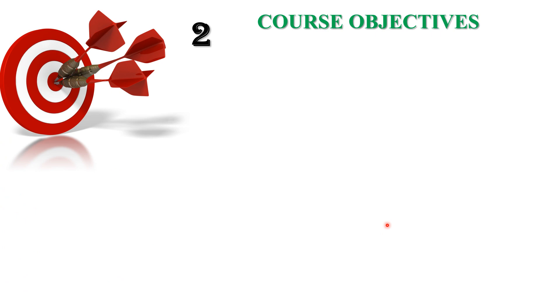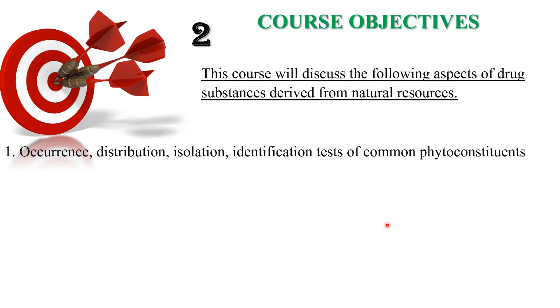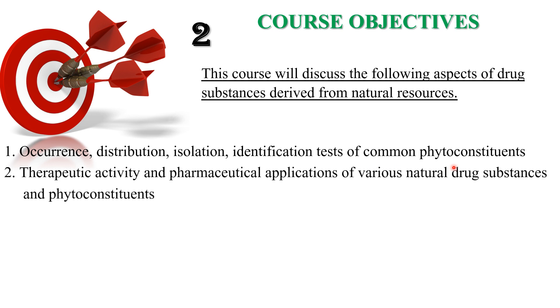The course objectives — objectives means what is the purpose, aim, or object of this course. The first objective is to provide knowledge about the occurrence, distribution, isolation, identification, and tests of common phytoconstituents. Then, therapeutic activity and pharmaceutical applications of various natural drug substances and phytoconstituents.